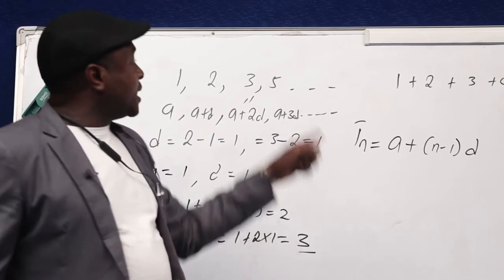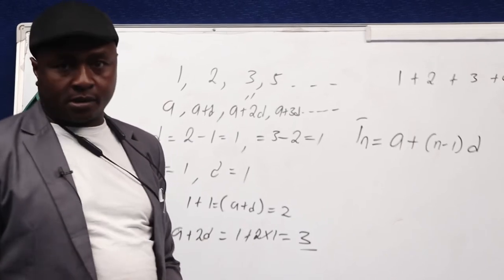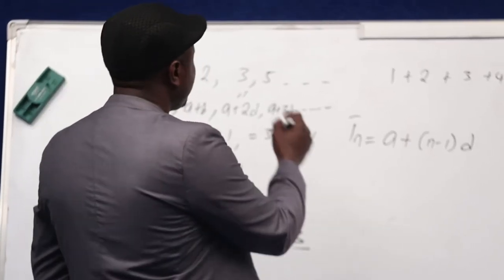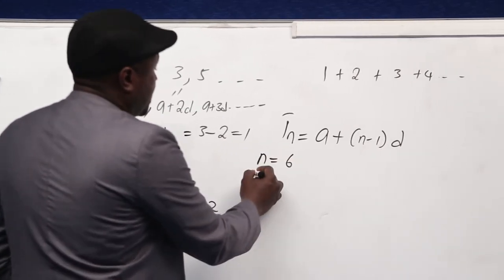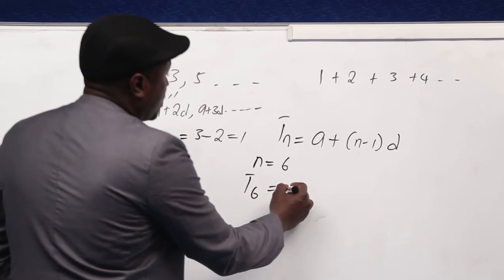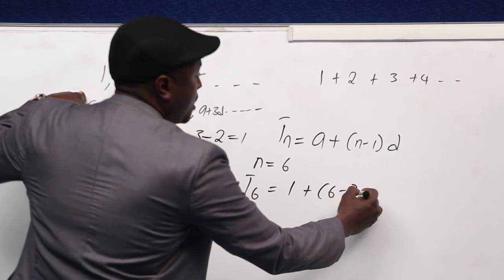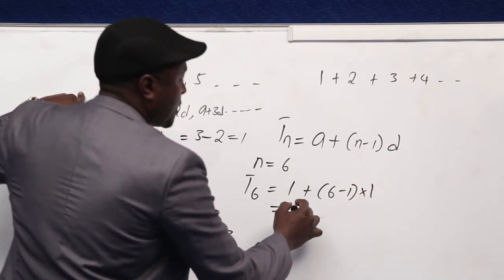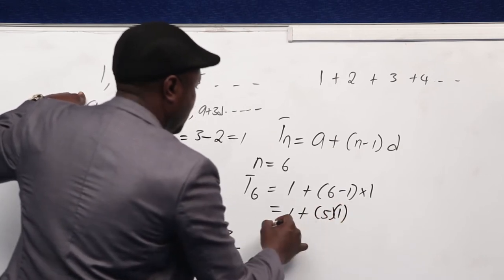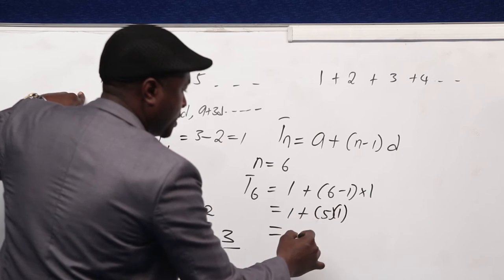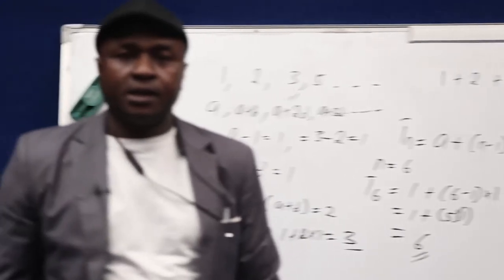Let's use the formula to get the sixth term. If we get 6, then the formula is correct. For the sixth term, where n = 6: T6 = A + (n − 1) × D = 1 + (6 − 1) × 1 = 1 + 5 × 1 = 6. Of course, the next term in this sequence is 6.